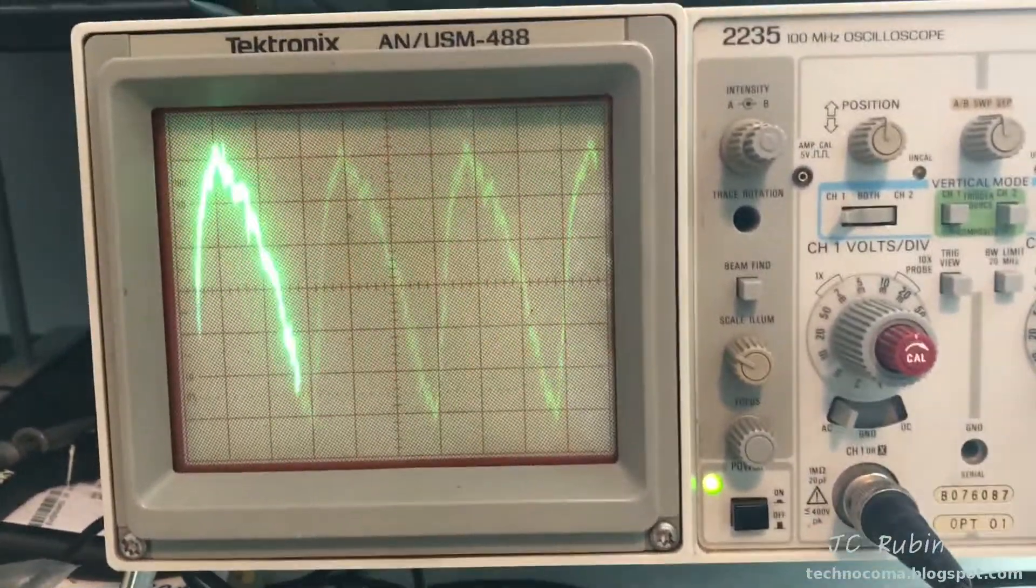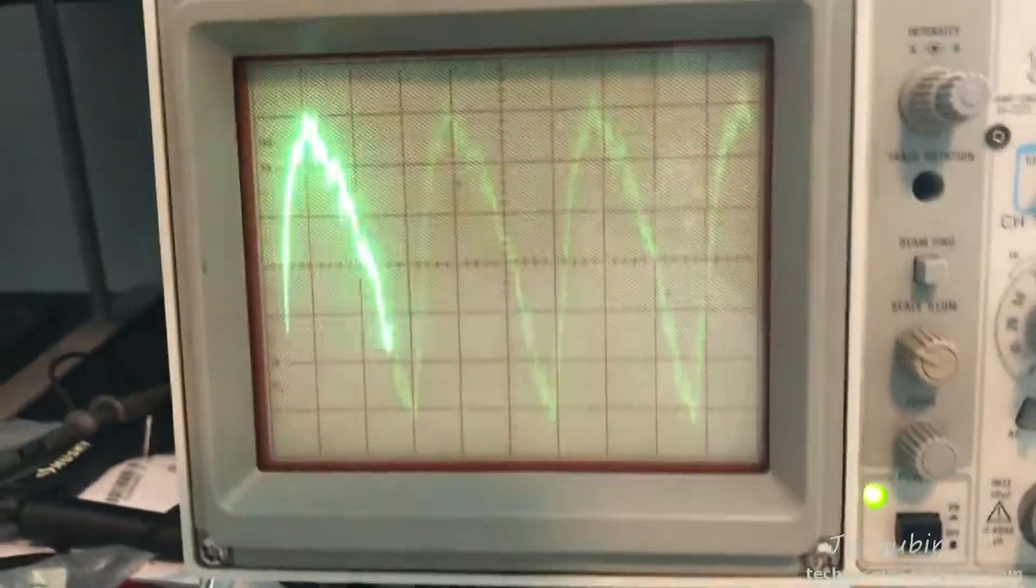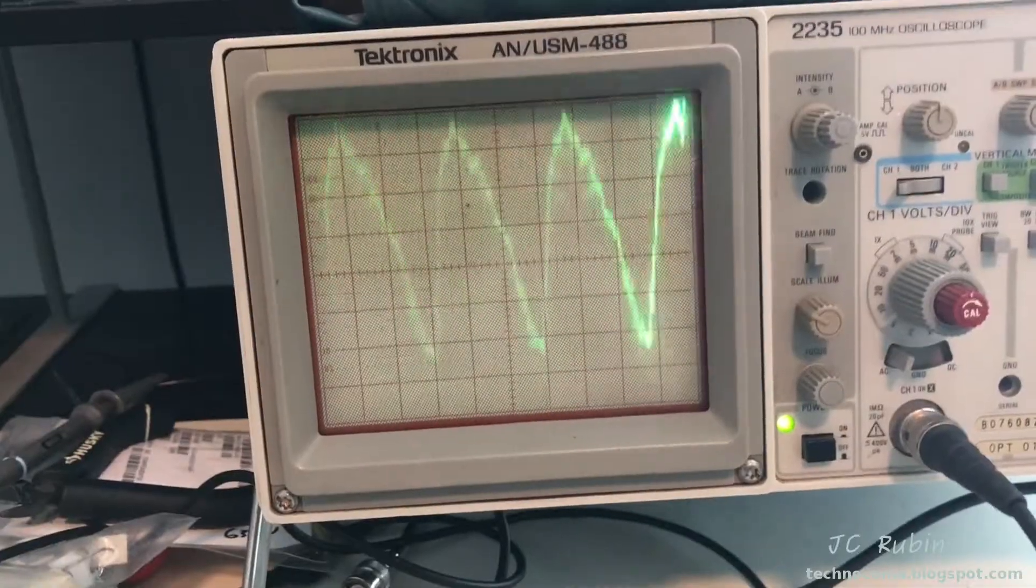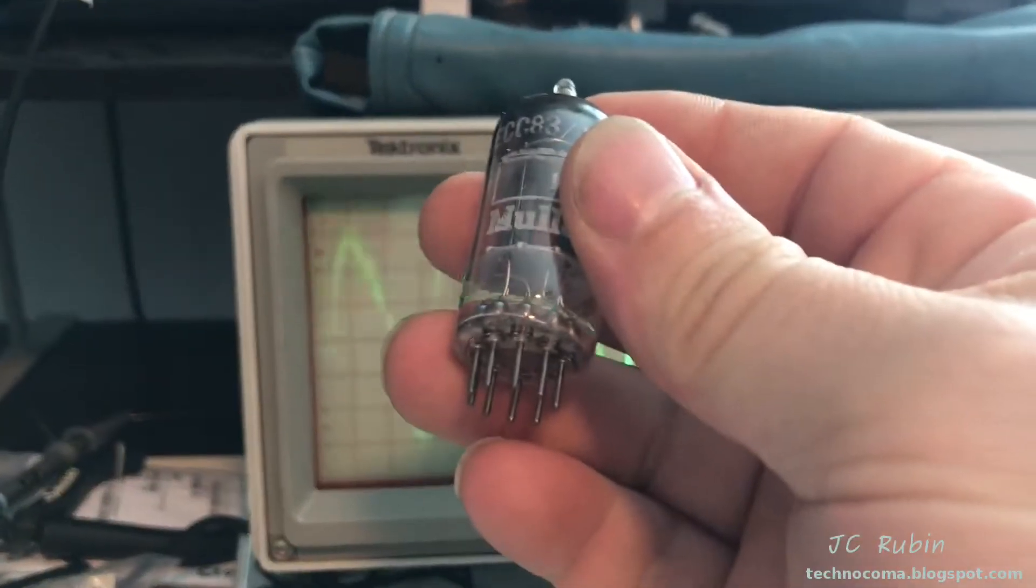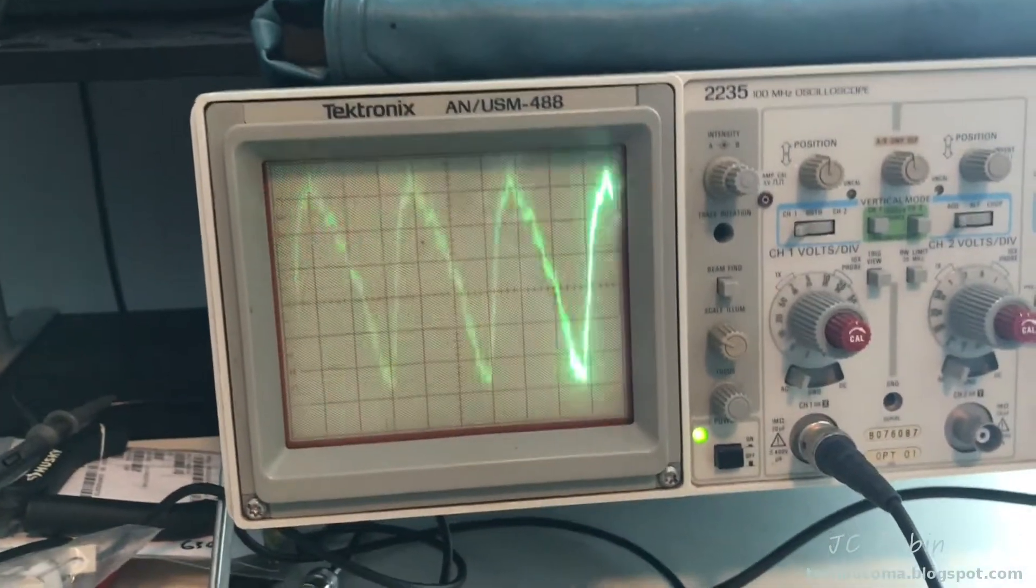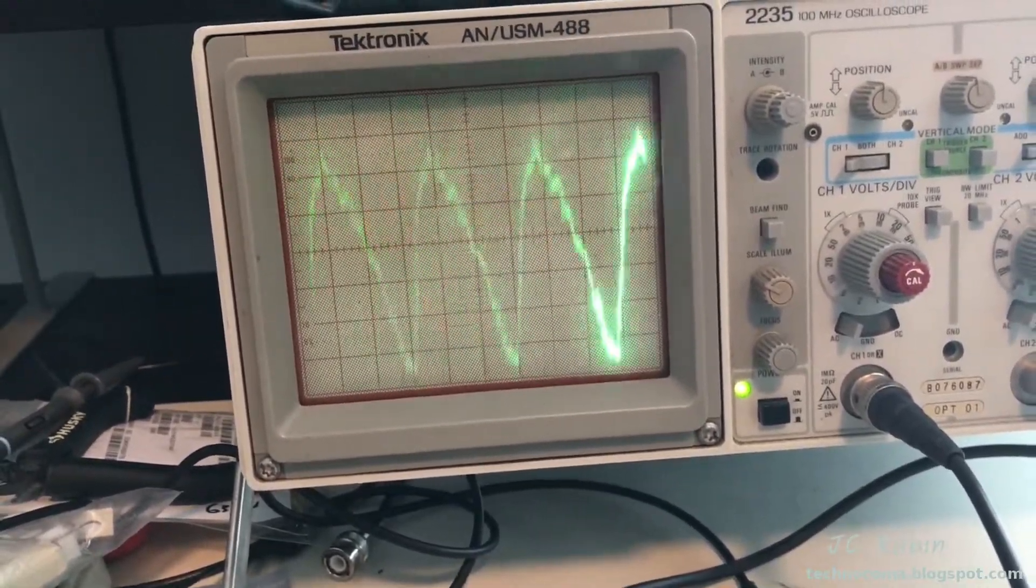And here's the thing. So this is pin one on the 12AX7. It's hard to talk about what I've been doing. Look, the tube's not in. The tube's out. This is pin one on the 12AX7 AC coupled. This is a power supply issue.